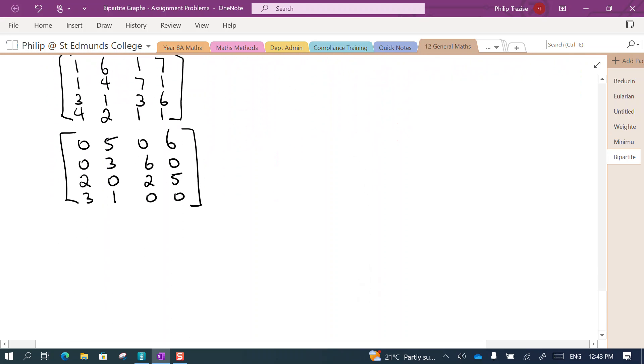Step three was cover with lines. Let's see, I've got, I can cover two there, two there, I can cover two that way. There we go, we've got more than four lines. I think we're ready to do our allocation.